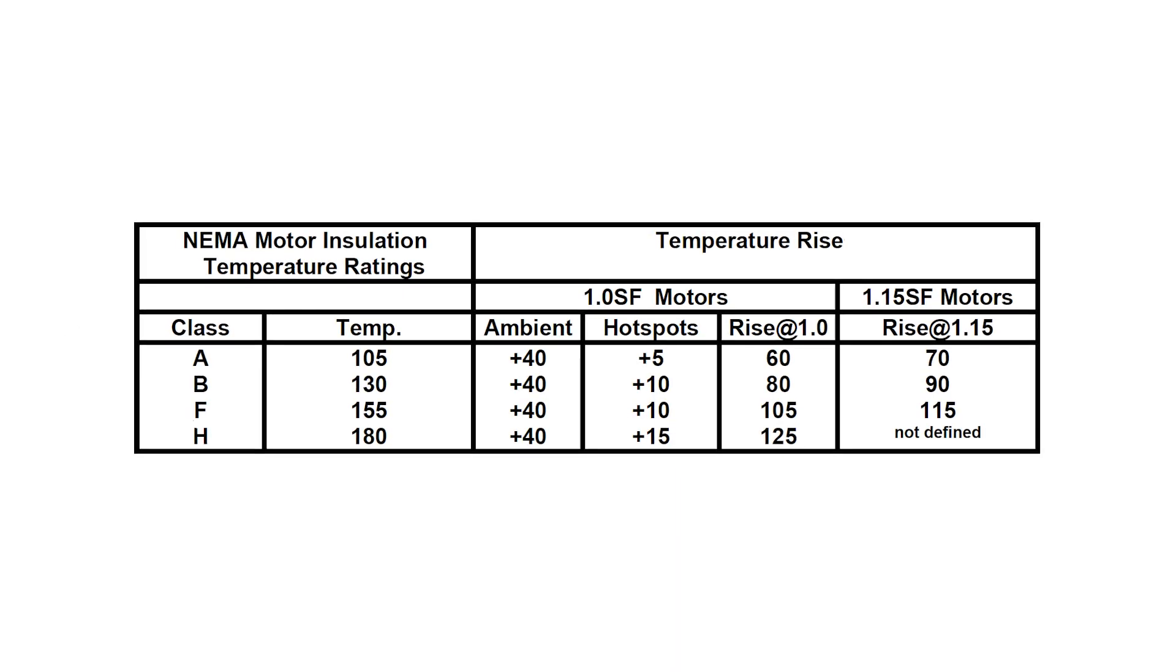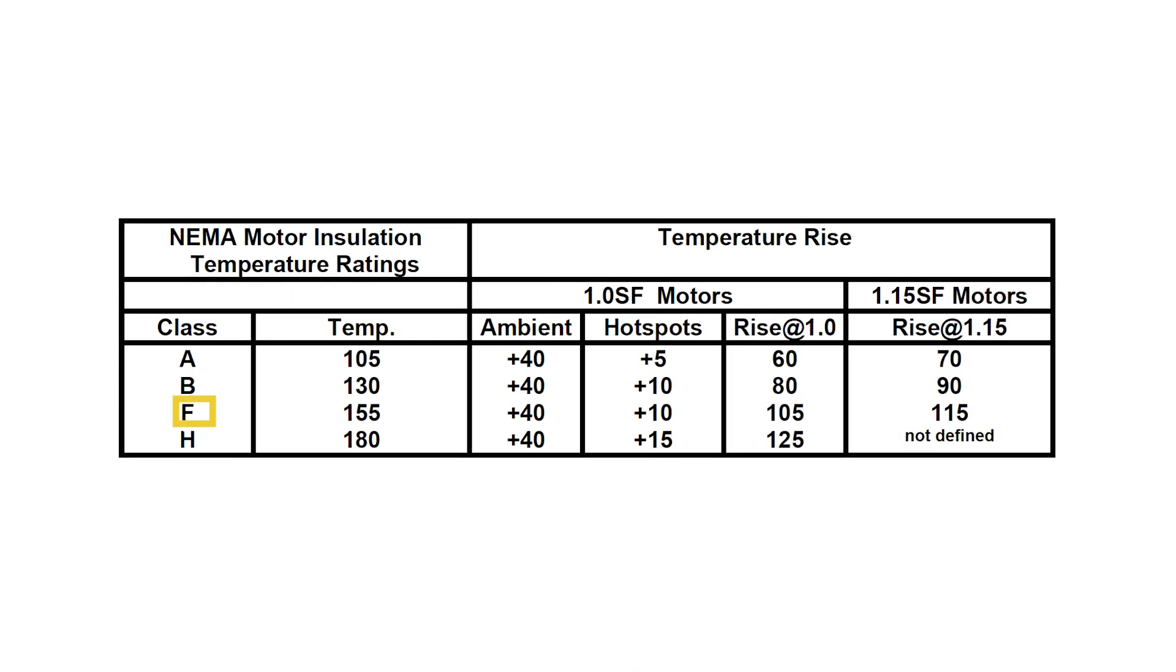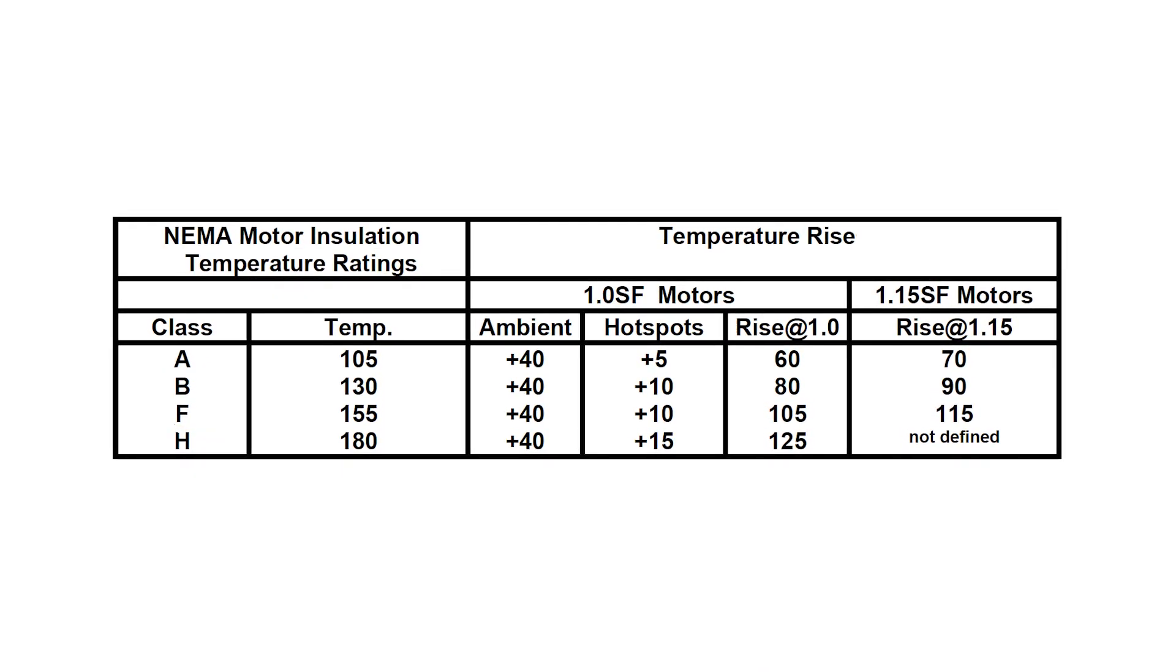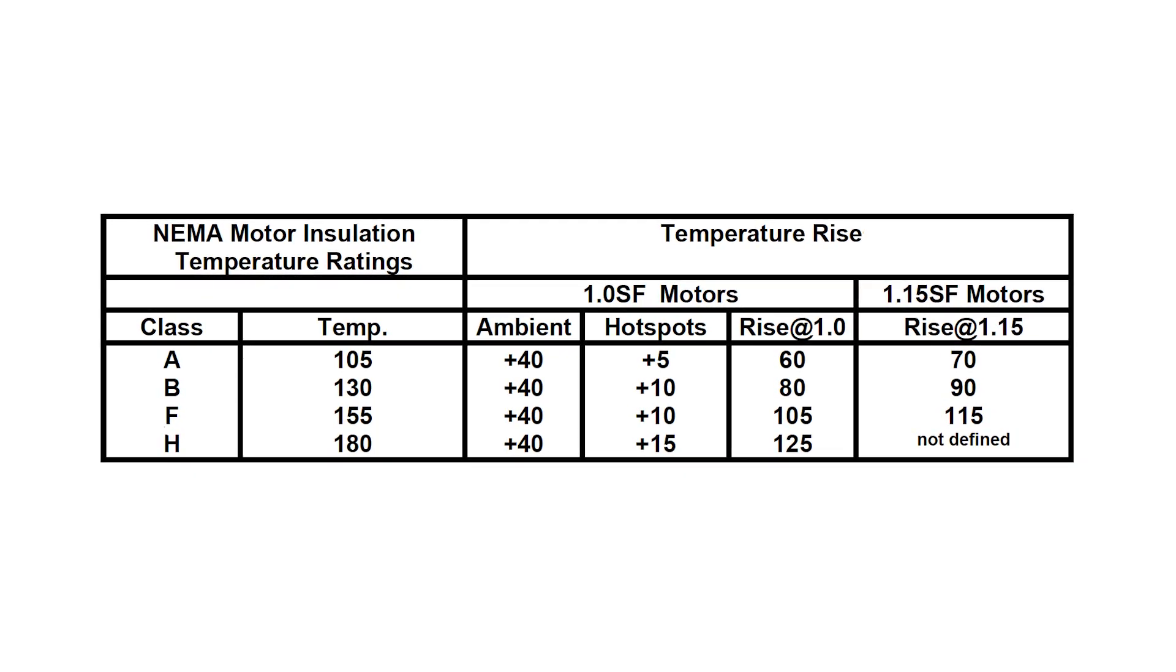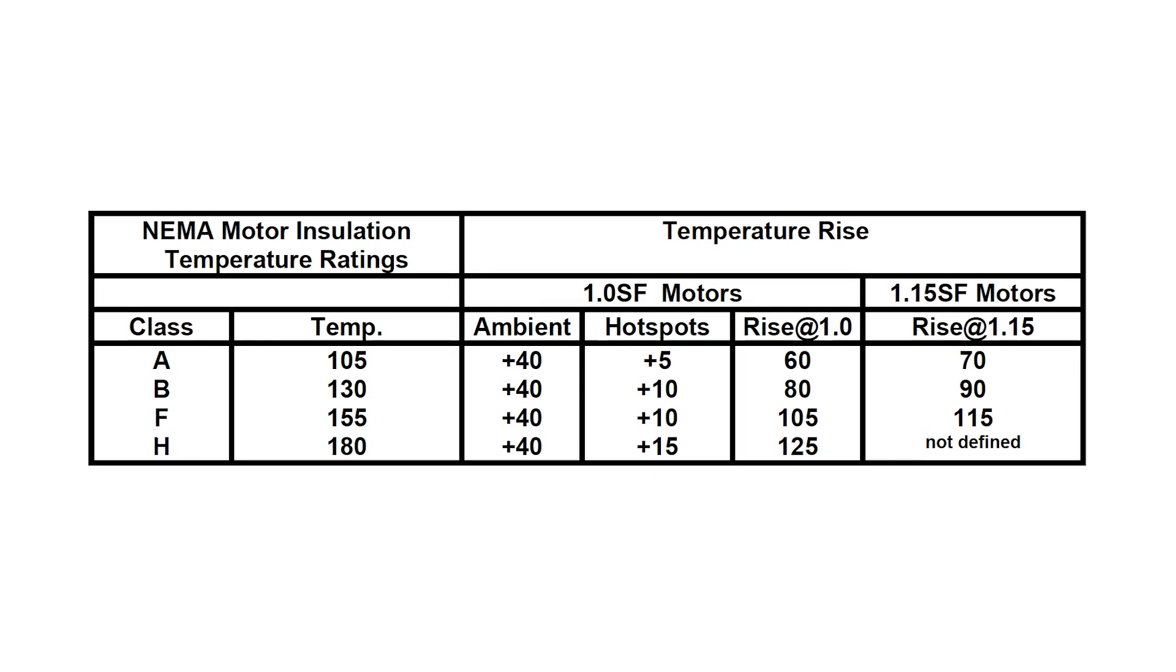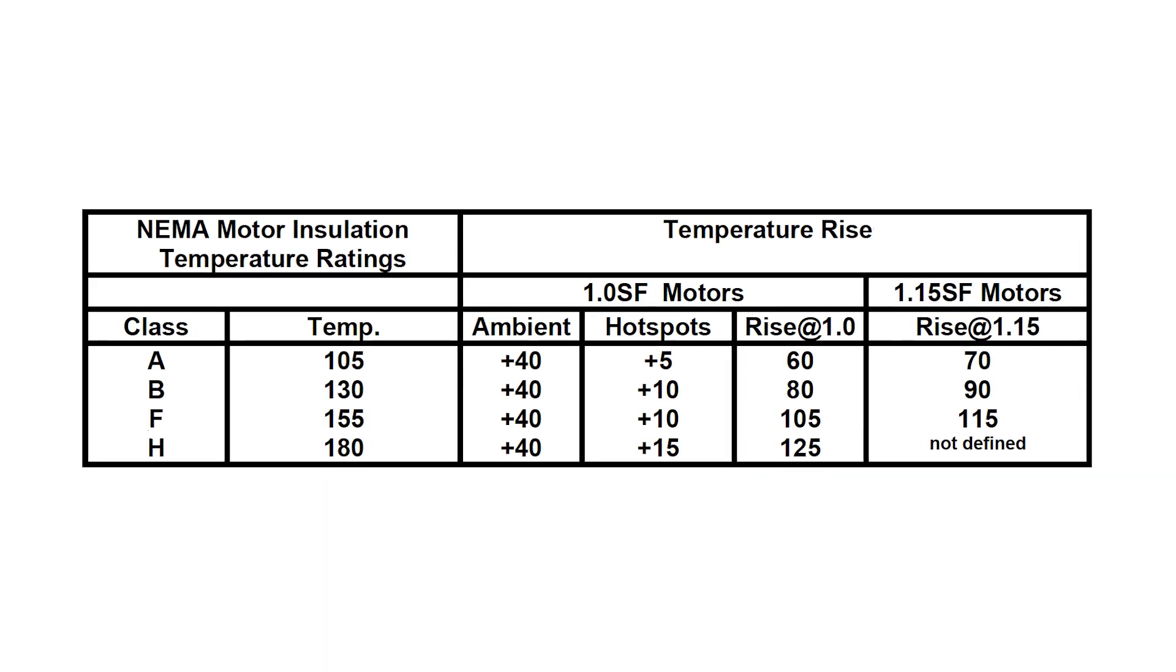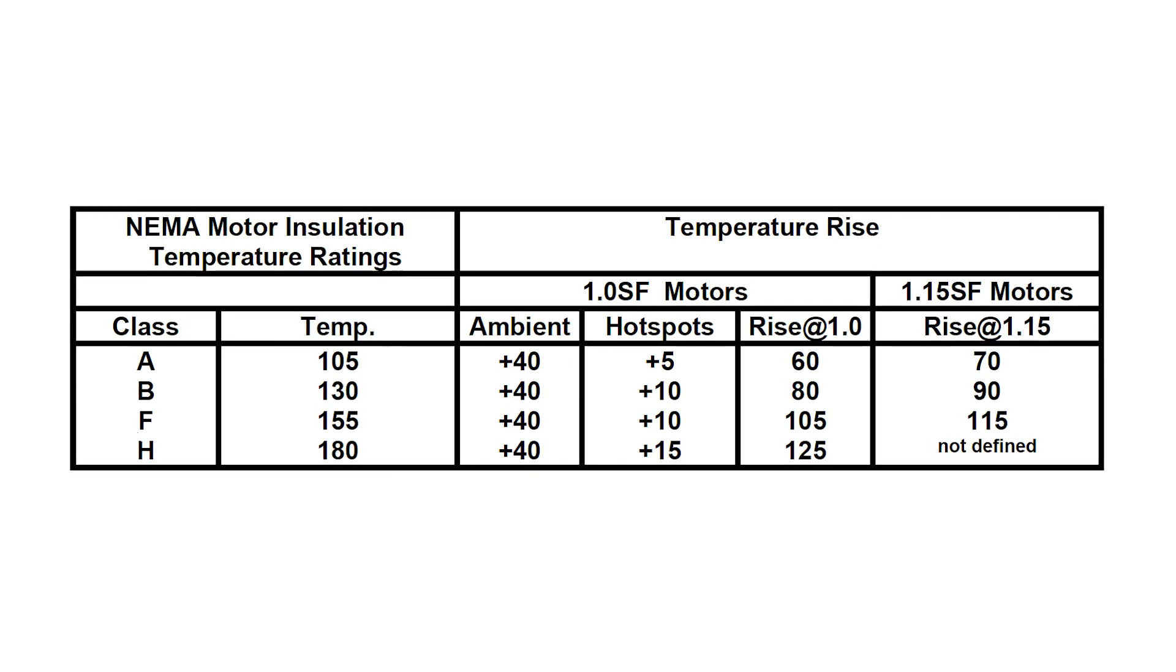The NEMA insulation classes currently in use are A, B, F, and H, although newer motors are rarely built with Class A insulation, which has a maximum winding temperature of 105 degrees C. The maximum winding temperature increases by 25 degrees C with each step up in insulation class.